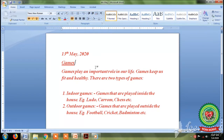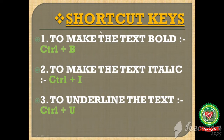Now the second way to apply bold, italic and underline effect is by using the keyboard shortcuts. The shortcut key to make the text bold is Ctrl+B, to make the text italic Ctrl+I, to underline the text Ctrl+U.